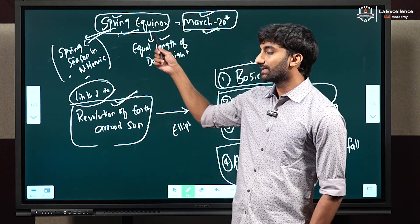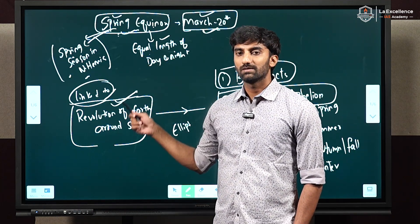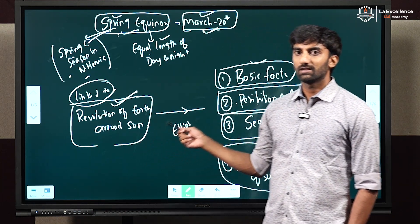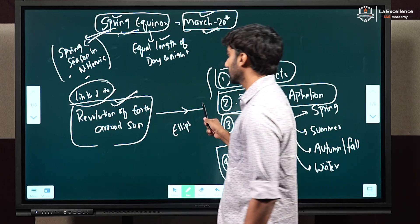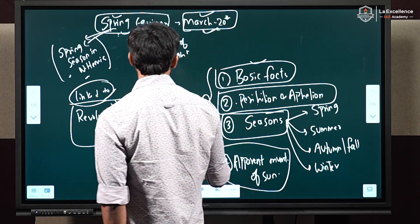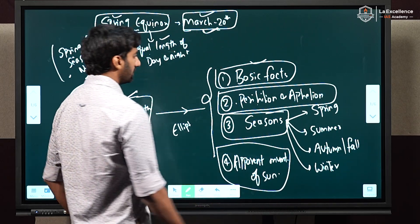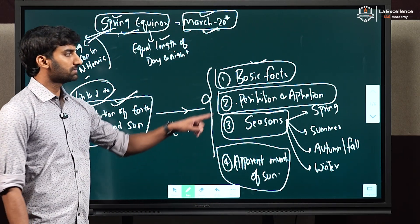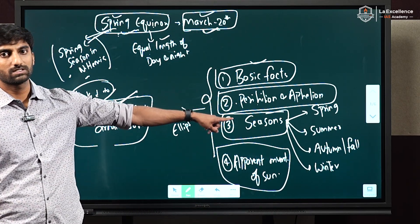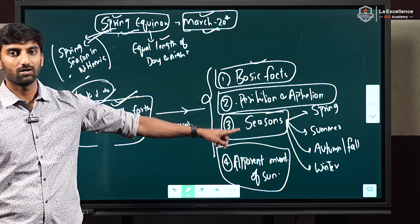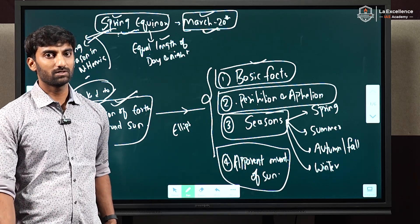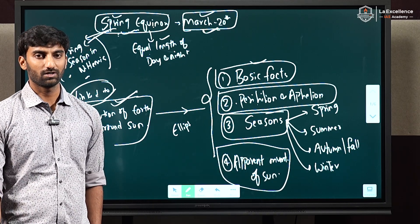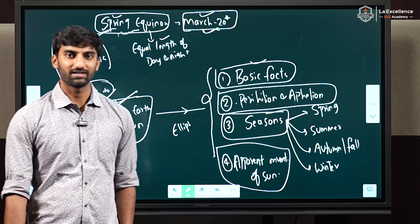So this is about spring equinox, revolution of earth around sun, and all the concepts associated with it. I hope you understood all of these concepts. If you have any doubts, you can drop a message in the comment box and I will be addressing your queries. Thank you.